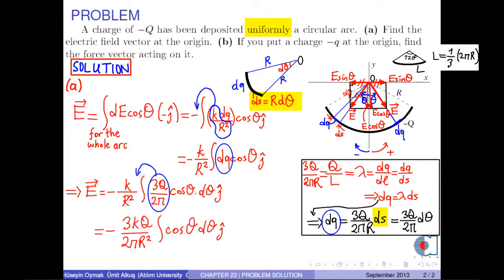So, we obtain 3kq over 2 pi r squared times the integral of cosθ j hat. Here, the integral variable is θ, which is between negative 60 degrees and positive 60 degrees.